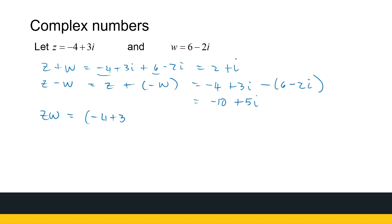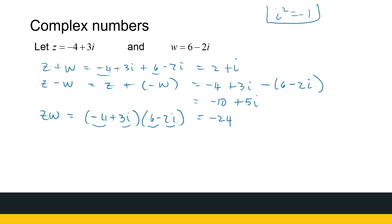For multiplication, Z times W is (minus 4 plus 3i)(6 minus 2i). We can use the formula or expand the brackets algebraically. The real part is (minus 4)(6) plus (3i)(minus 2i) = minus 24 plus minus 6i² = minus 24 plus 6 = minus 18. The imaginary part is (minus 4)(minus 2i) plus (3i)(6) = 8i plus 18i = 26i. So Z times W equals minus 18 plus 26i.